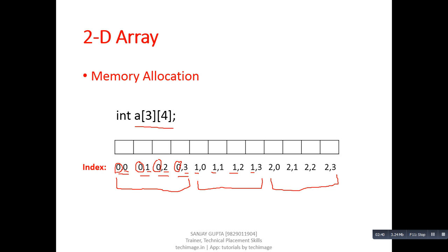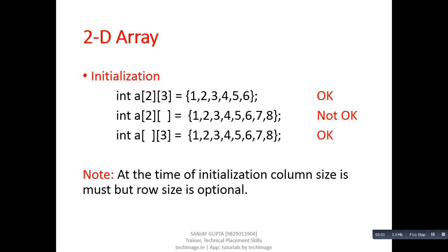To access the first element we use index [0][0], for the second element [0][1], for the third element [0][2], and for the fourth element [0][3], and so on.